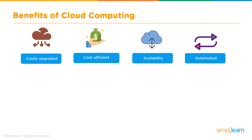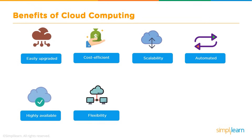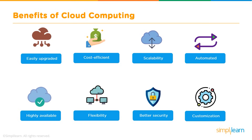Cloud computing provides many services enabling automation — you can create, automate, and even deploy applications automatically. It is highly available due to redundant infrastructure, so your applications can be highly available. It is flexible, allowing you to shift between services and infrastructure as needed, provides better security for managing applications and databases, and allows customization as per your requirement.